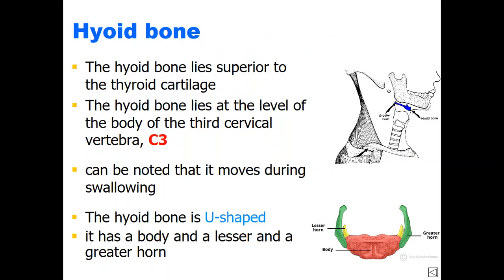The second part of the skeleton of the neck, in addition to the seven cervical vertebrae, is the important hyoid bone. The hyoid bone lies just above the level of the thyroid cartilage, approximately at the level of C3 vertebra. Due to its attachment with the muscles of swallowing, we can see it moving up and down during swallowing. Morphologically, the hyoid bone is U-shaped with two main projections on each side called the greater horn and the lesser horn.